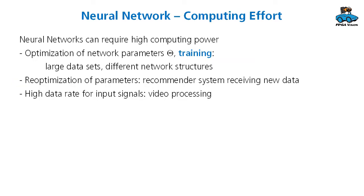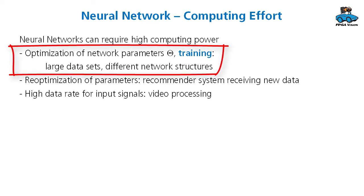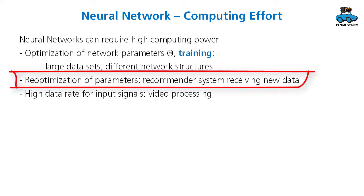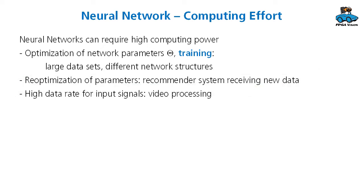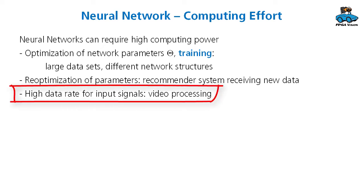Neural networks can require high computing power. There can be different stages in your development where you need this power. One is the optimization of the network parameters theta — this is called training. Often you have large data sets and can try out different network structures, so you need high computing power to determine these parameters. Some applications require this optimization several times, for example recommender systems, where you always get new data, new products, and new information about user selections. You can also have high computing effort because of a high data rate for input signals, which is often the case for video processing where there is a lot of information in the video signal.